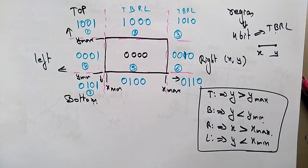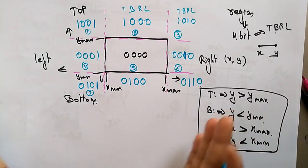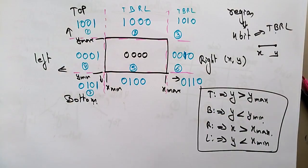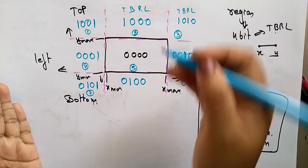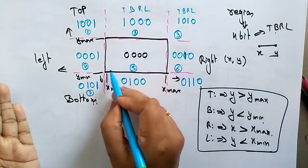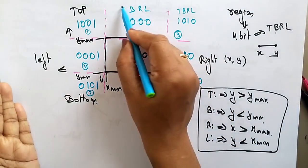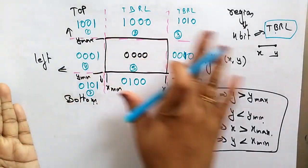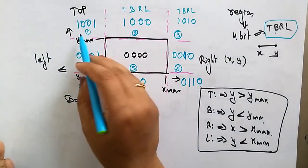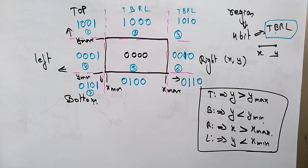Based on these codes you solve the Cohen-Sutherland line clipping problem. If a line is inside the clipping window, all four bits are zero. If it is outside, you assign the code based on TBRL — Top, Bottom, Right, Left. In the next video I will explain with an example, and then cover the algorithm. Understanding the example first makes the algorithm very easy.